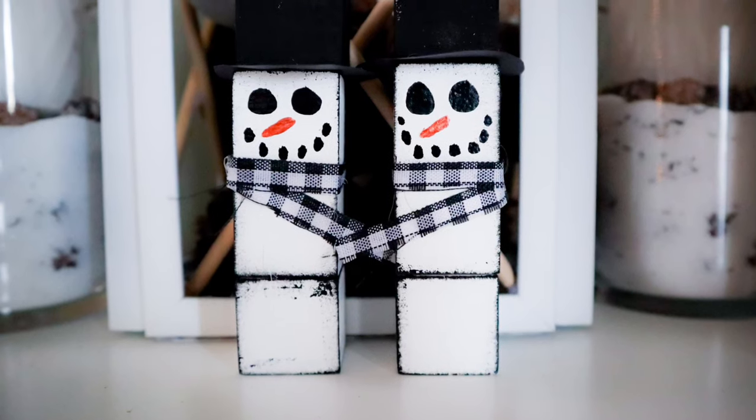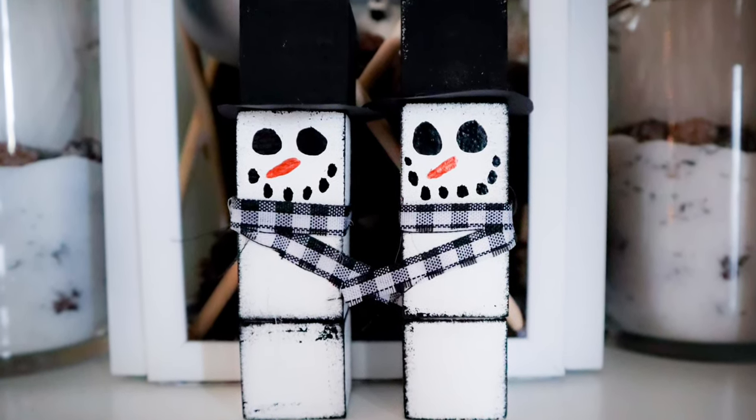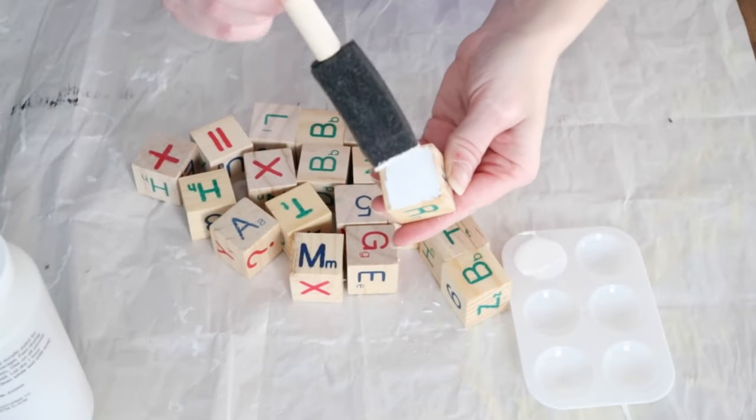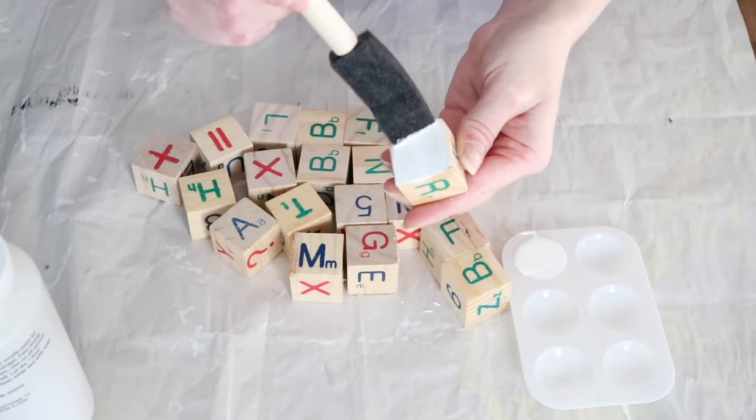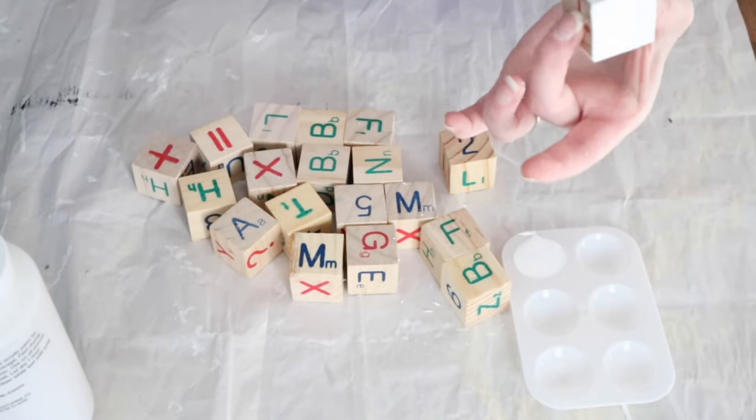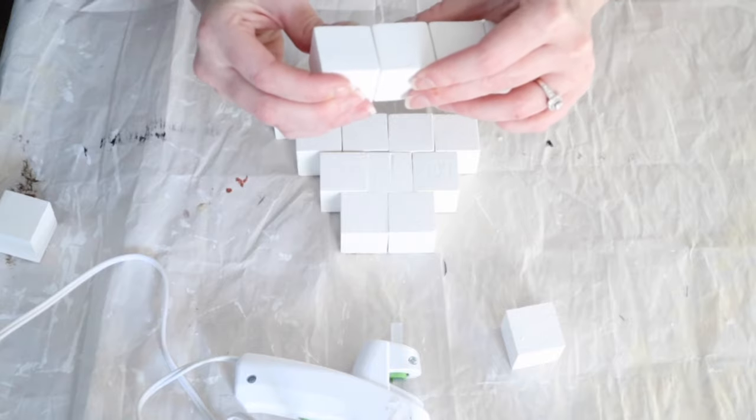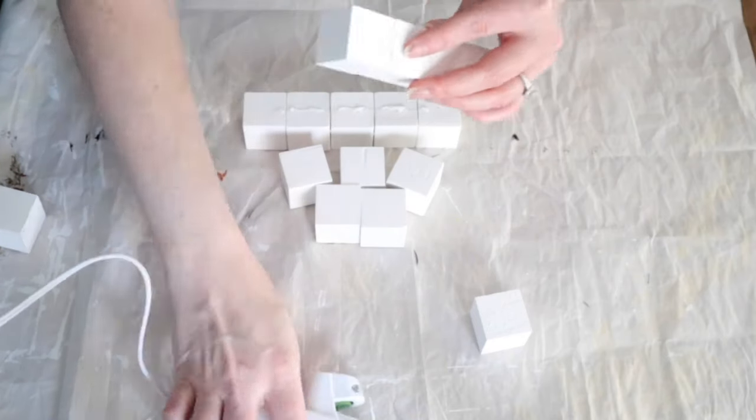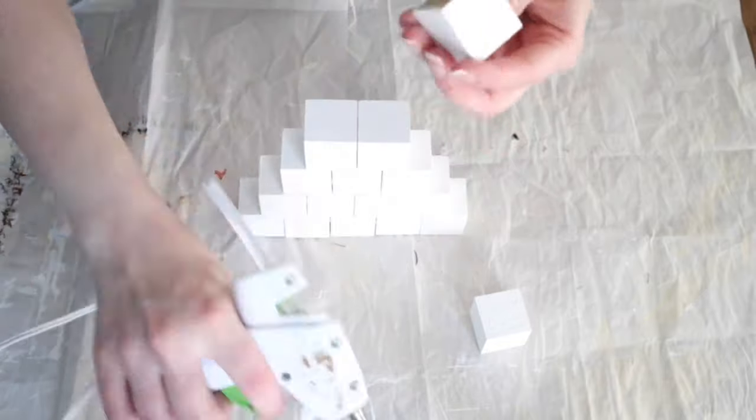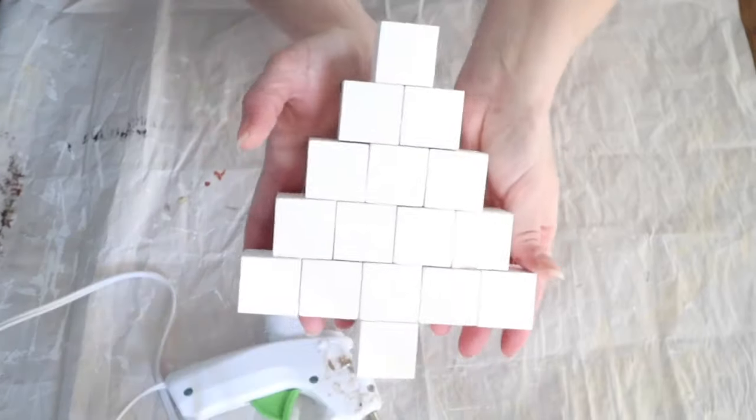For this final project, if you watched my last video, I made some little snowmen from these Dollar Tree alphabet blocks. So I decided I'm just going to use the rest of what I had to make this Christmas tree. Just like in the last video with the snowmen, I just painted these blocks with the matte white paint that I had. Once I had painted all the blocks and they were dry, I just put them in rows to make the Christmas tree and then I hot glued the blocks together.